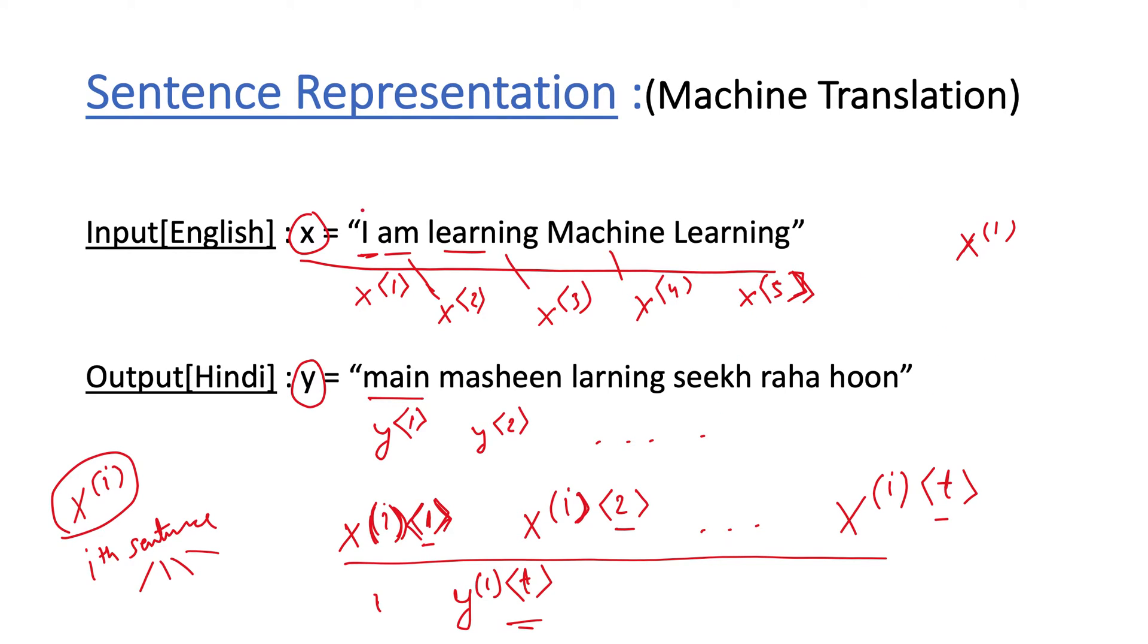Now to denote the total number of words in a sentence we will use this notation. T_x equals 5 because we have 5 words in this input sample, and the output we have 2, 4, 6, so T_y is 6.